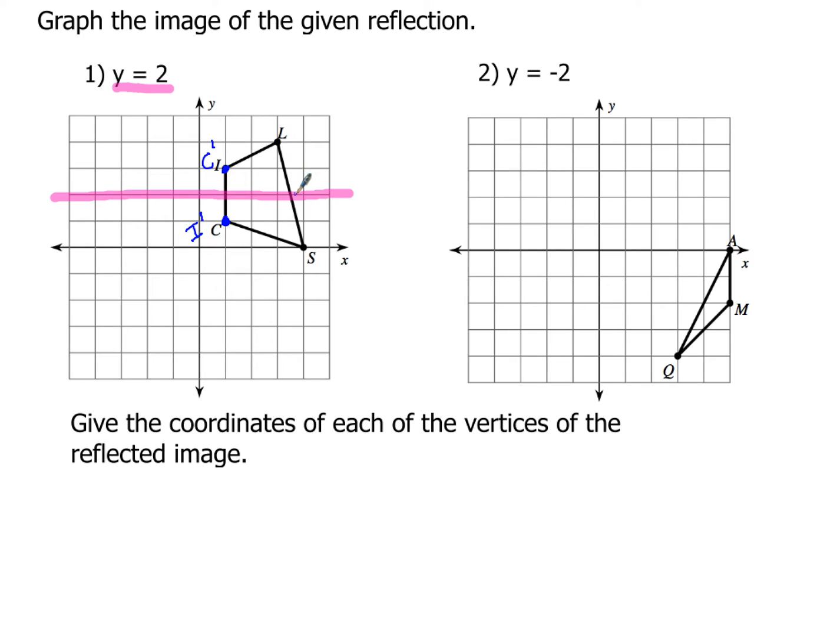Now if I go over to l, l is two places, two units above the line y equals two. So that means I'm going to need to go two units below the line y equals two. So l prime would be right there. And then s, that's two units below. So I've got to go one, two units above. And that's where s prime is going to be.